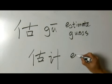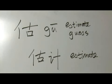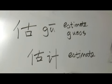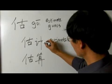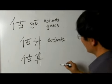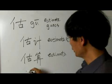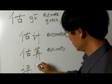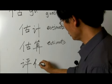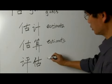Let's estimate. And gu suan — both ji and suan mean to calculate, so it has the same meaning: estimate. And pinggu, that means to evaluate.